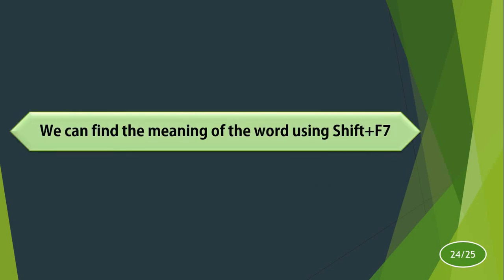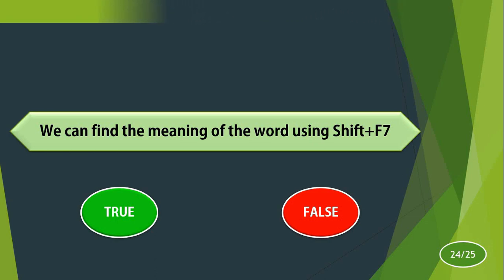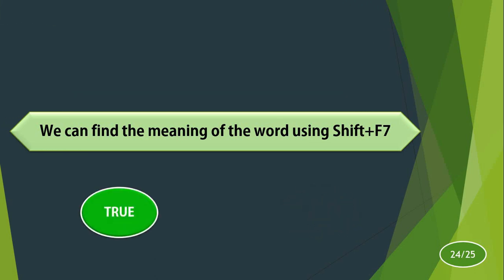We can find the meaning of a word using Shift+F7. True or false? Write your answer before the timer vanishes. The answer is true. Shift+F7 is for Thesaurus and is used to find the meaning of a particular word. So the answer is true.